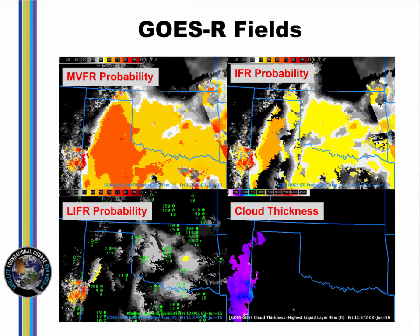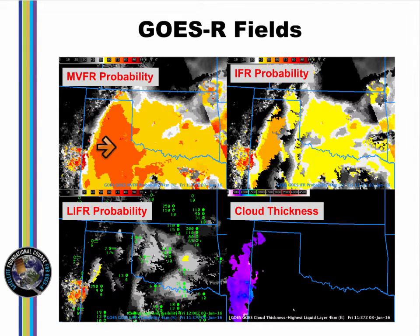Three different IFR probabilities are produced: MVFR probability, IFR probability, and low IFR probability. Marginal VFR probability is the probability that MVFR or lower conditions are present. MVFR probabilities are always greater than IFR probabilities, which are always greater than low IFR probabilities.